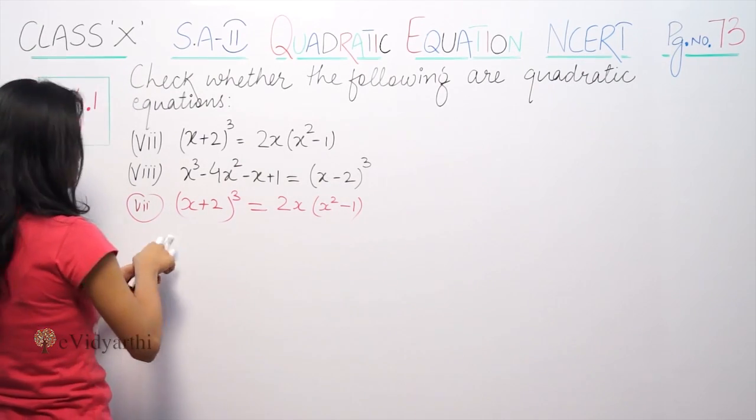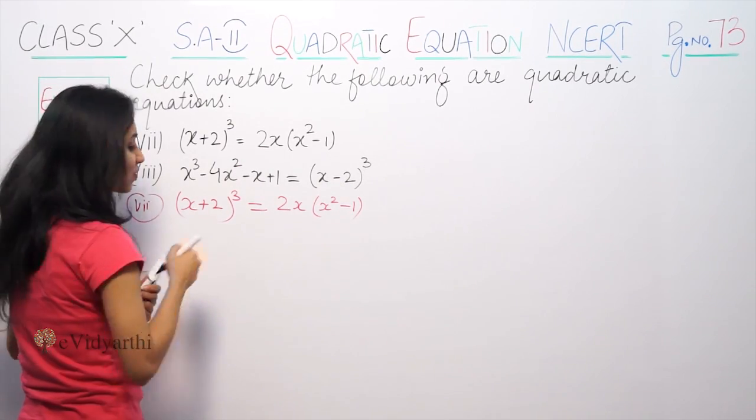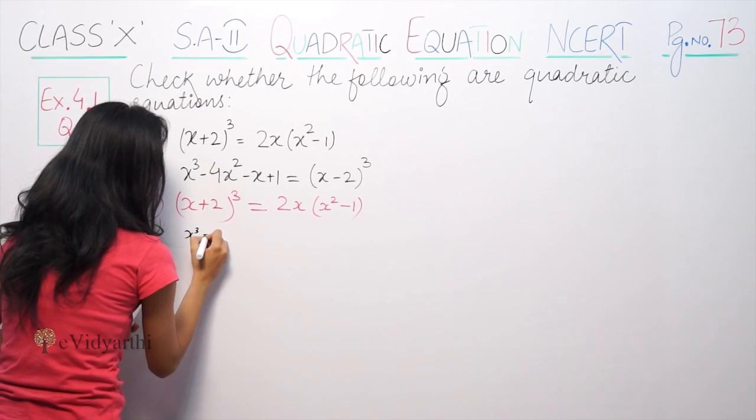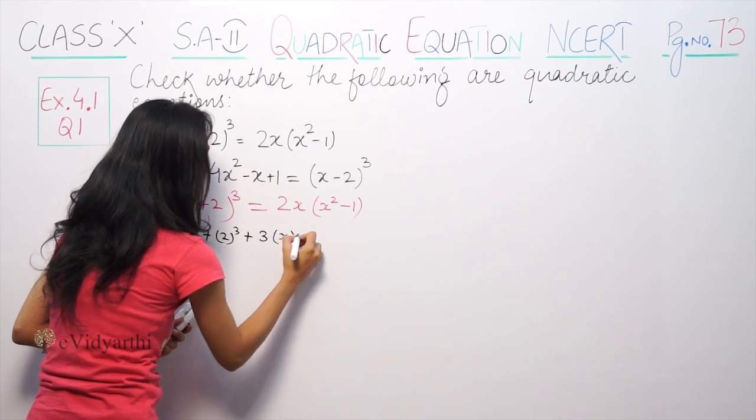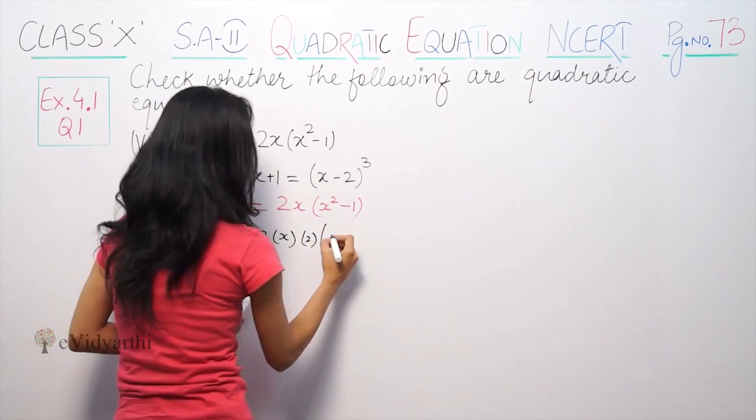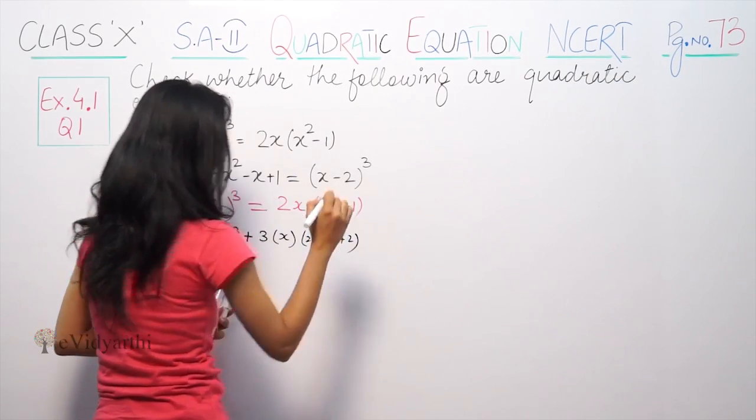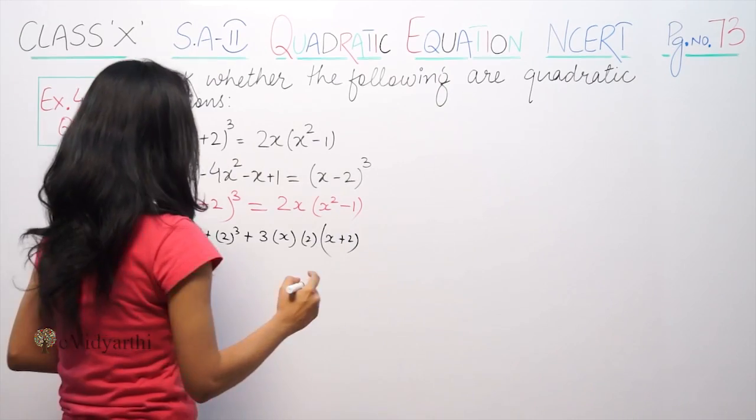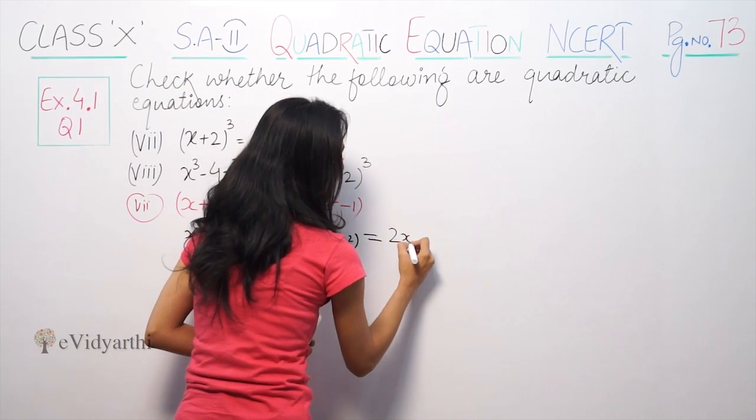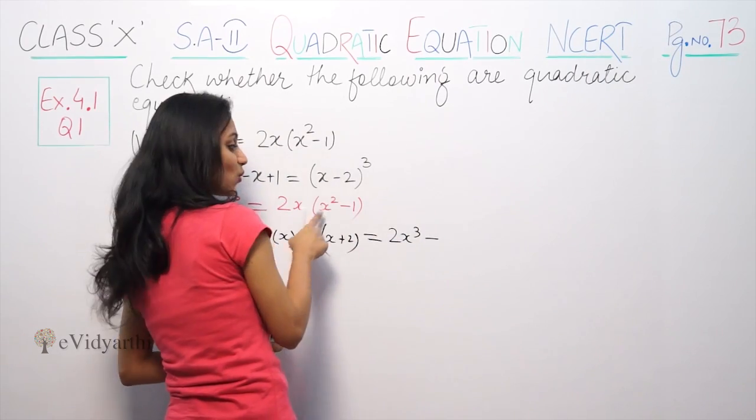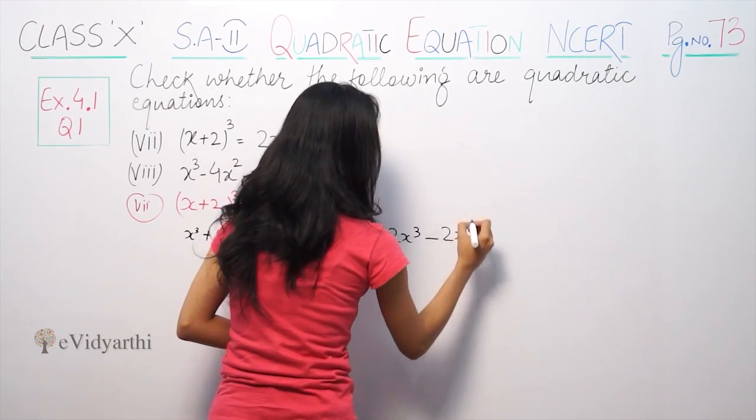So here, (x+2)³, a+b whole cube is a formula. So a³+b³+3ab(a+b). Using this formula for (x+2)³ is equal to 2x into x² which becomes 2x³ minus 2x into 1 is 2x.